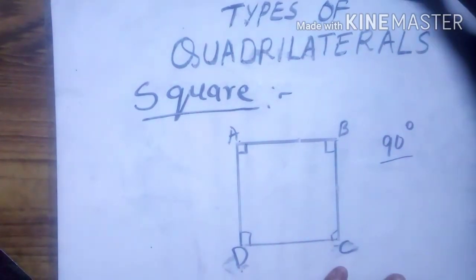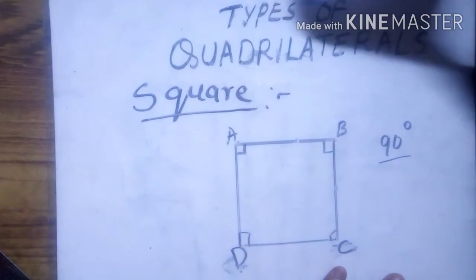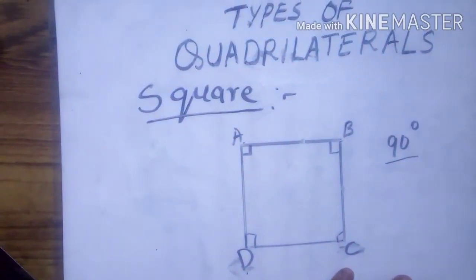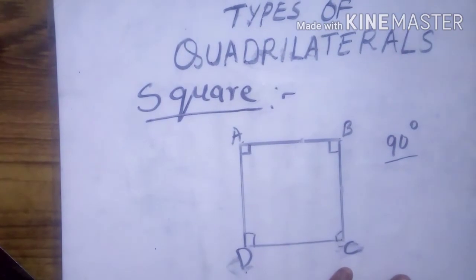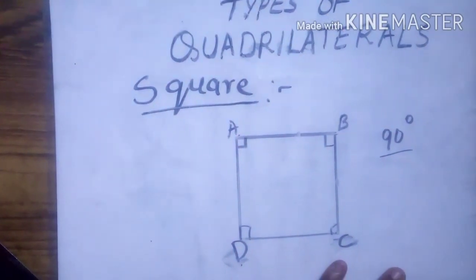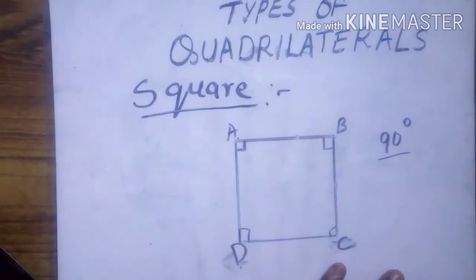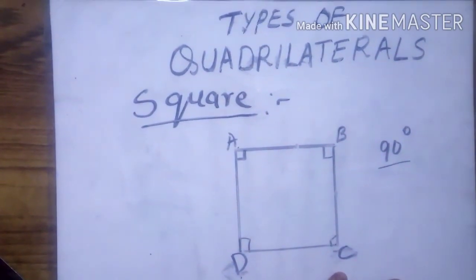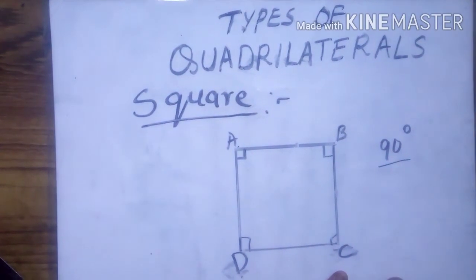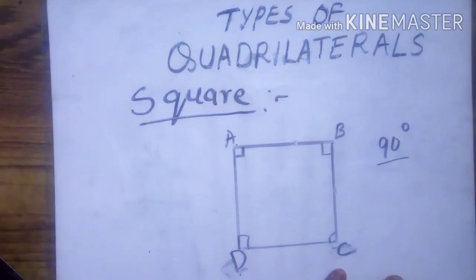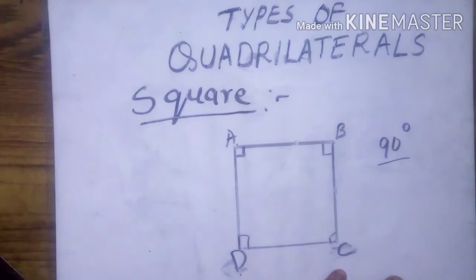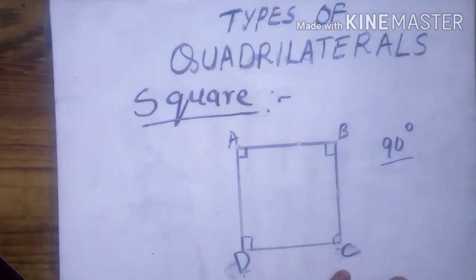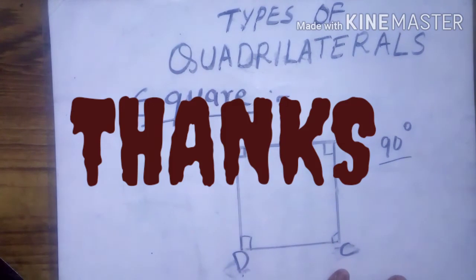To summarize the types of quadrilaterals: parallelogram, rectangle, and square. And for triangles, the three types are equilateral triangle, isosceles triangle, and scalene triangle. We can continue in the next class. Thank you.